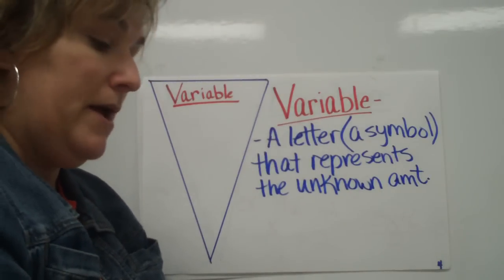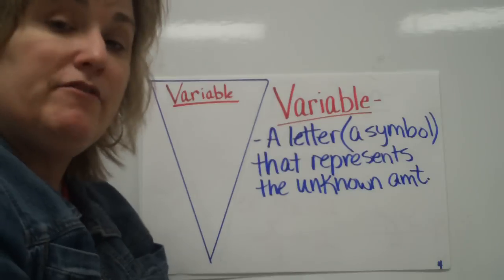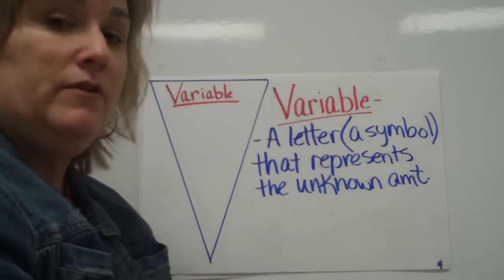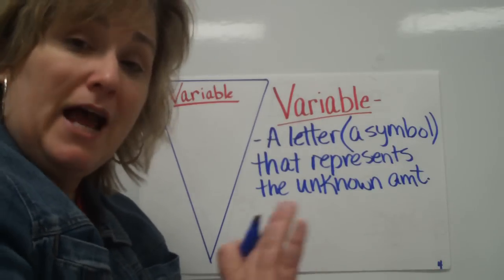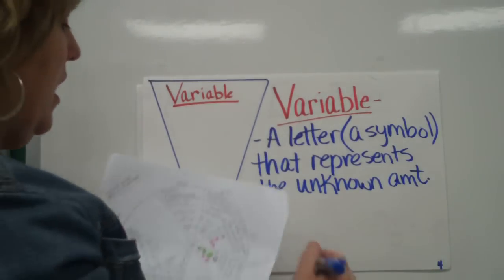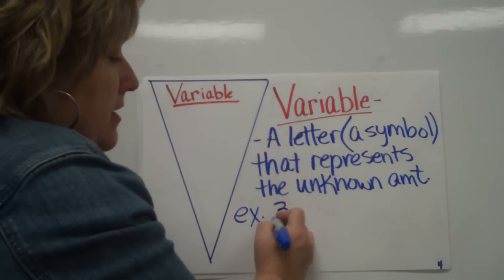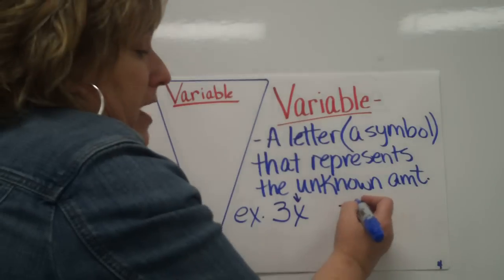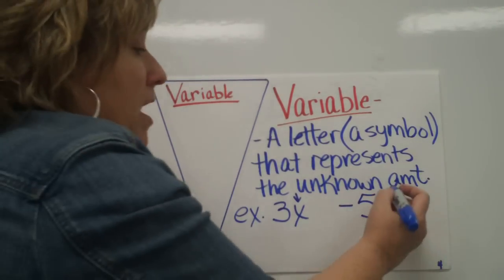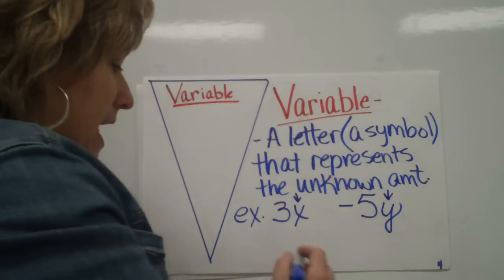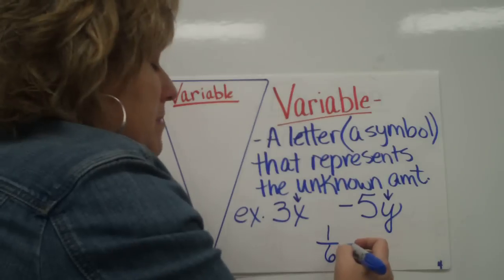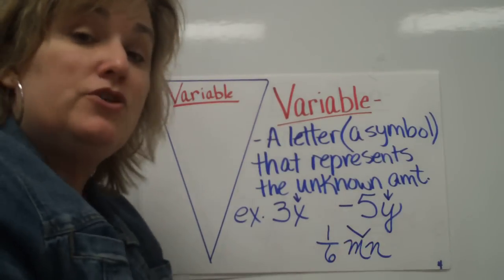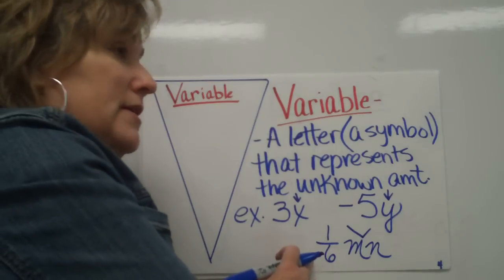It's the letter that represents the unknown amount. I've used a highlighter on my notes that I'm going to have in my notebook, so if you have one at home, different color ink pens or coloring pencils, and you want to differentiate your notes a little bit, that's perfectly fine. What I did was I put down my examples and then I highlighted my variable. Here's example number one: I have 3x, and of course I have my x highlighted because it's the variable. I also have negative 5y, and I have my y highlighted. Then I have also one-sixth mn, and I have both of these highlighted because there are two variables in this one.